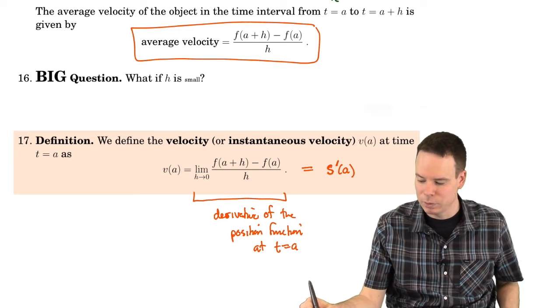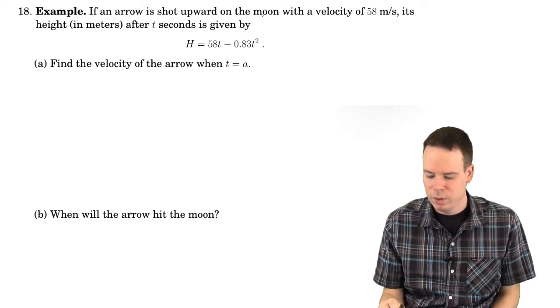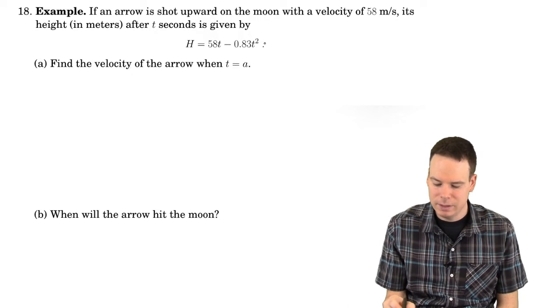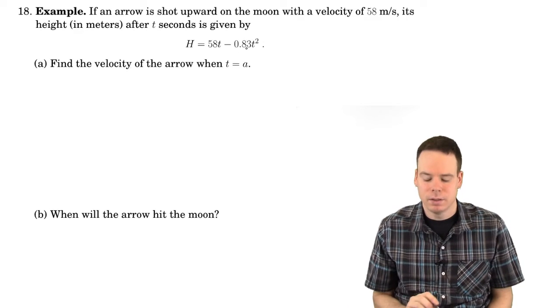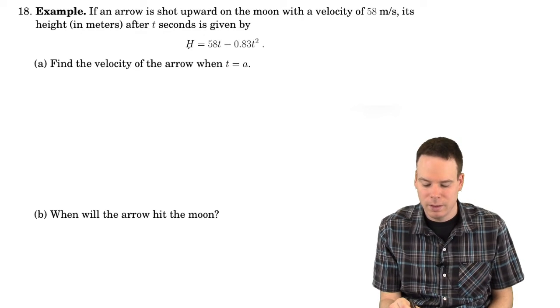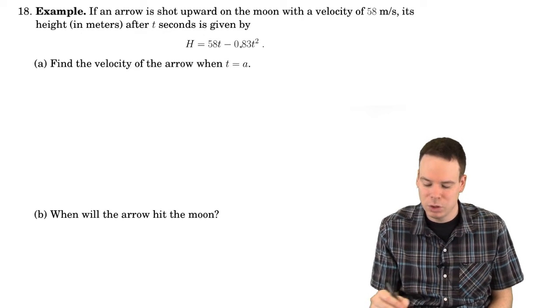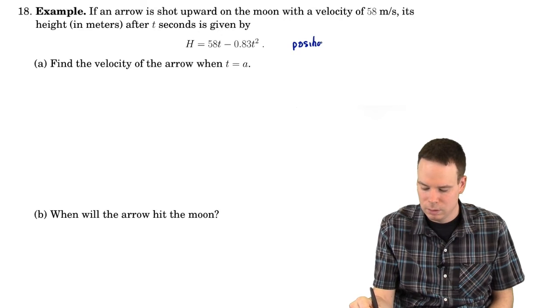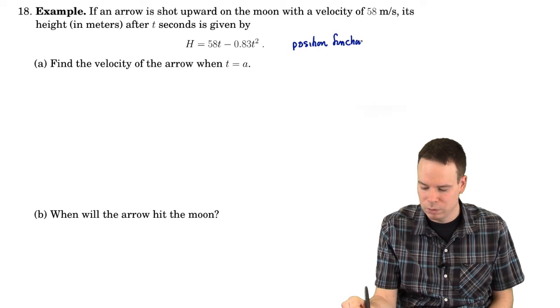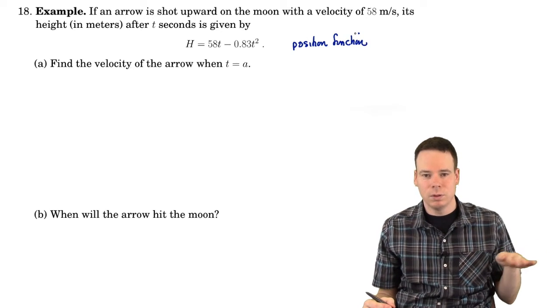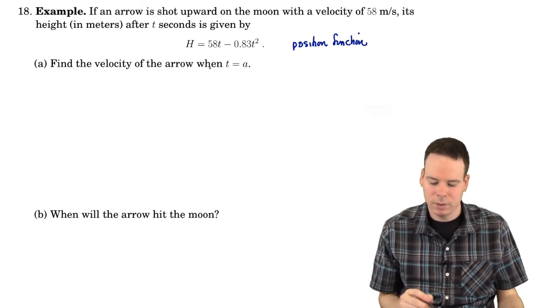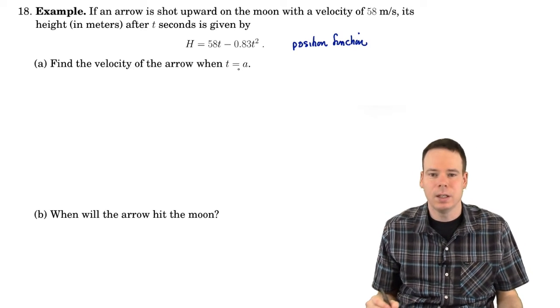So let's look at some examples. If an arrow is shot upwards on the moon with a velocity of 58 meters per second, its height after t seconds is given by this expression. So this tells us the height at a given time. This is the position function. It tells us the height at a given time. So it's the position measured relative to the ground from where it was launched.